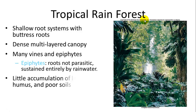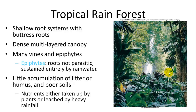Epiphytes are plants that can grow on top of other plants, being sustained essentially just by rainwater. There is little accumulation of litter or humus on the ground — it usually decomposes very quickly and organisms take advantage of those nutrients. Nutrients are also leached by heavy rainfalls, so with constant rain, debris is constantly being taken away from the soil.